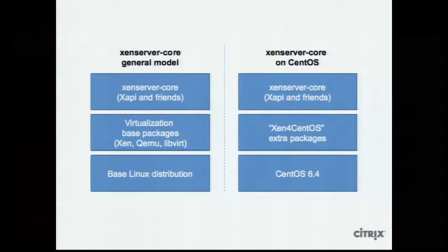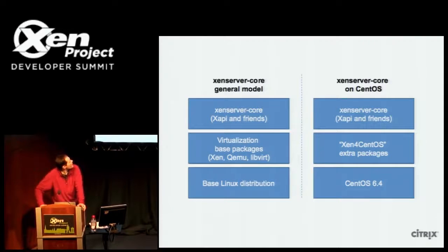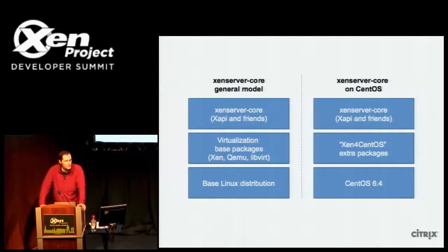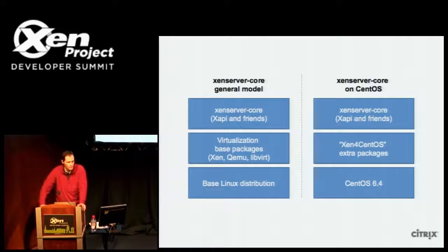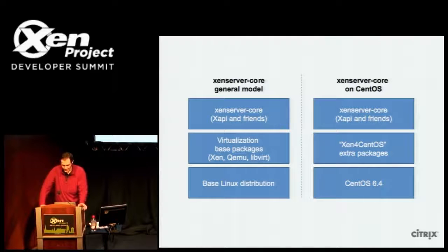Here's a different way to look at it. This is a diagram that James had on a blog a little while ago. Basically there's a layer cake. XenServer Core is essentially the top layer. The particular example of XenServer on CentOS — the Xen for CentOS extra packages — that's an extra repository which has the Xen spec files and various other bits, other RPMs for CentOS 6.4. We as Citrix are working quite closely with CentOS in maintaining that and getting that stuff all working well.